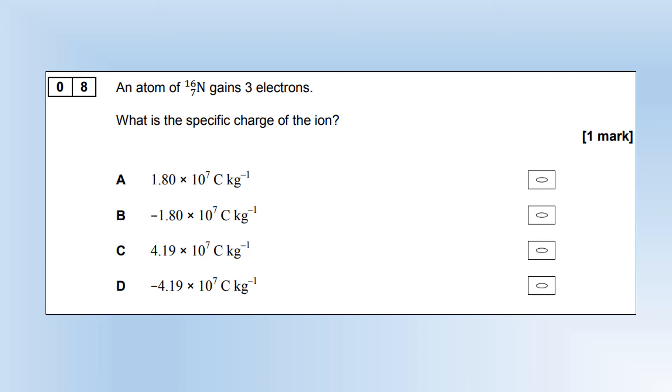We're going to take a look at section B of the A-level physics paper 1 from 2017. Starting off with calculating specific charge. Specific means per unit mass, so we're essentially working out the charge per unit mass.